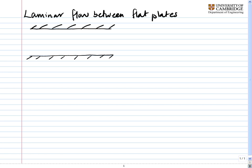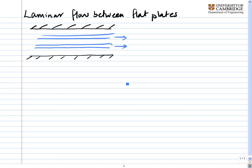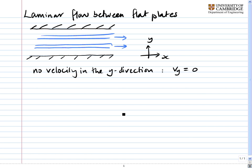The first thing we have to do is assume laminar flow. Essentially that means we think of layers of fluid moving over each other and moving only in the vx direction — only in the x direction, which I'll define parallel to the plates. The y direction I'll define perpendicular to the plates. So there's no velocity in the y direction: vy is equal to 0.